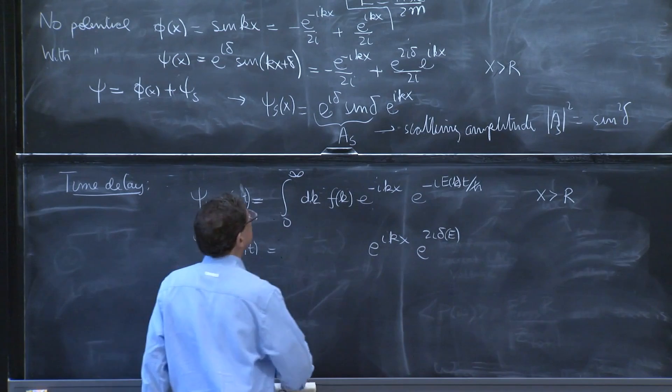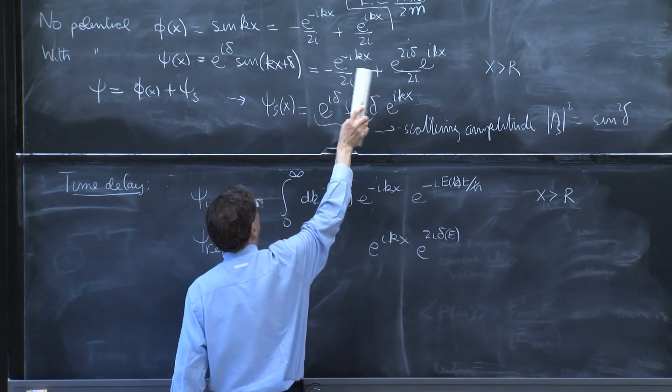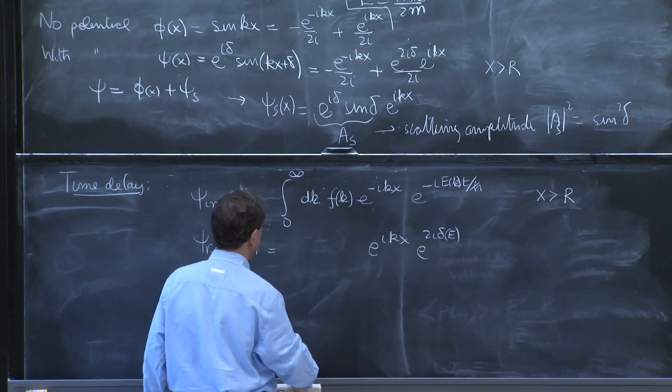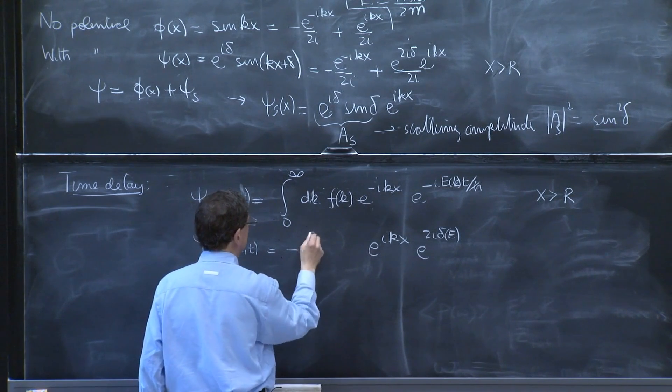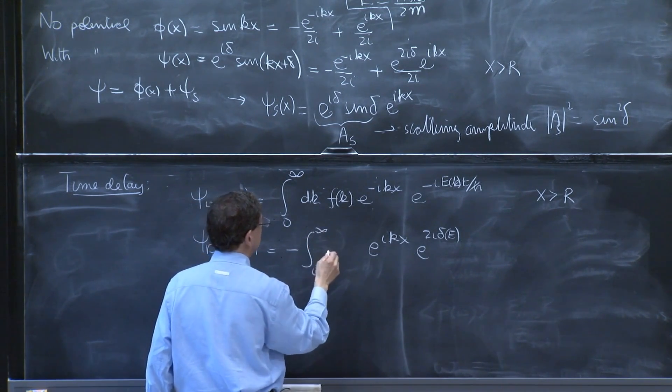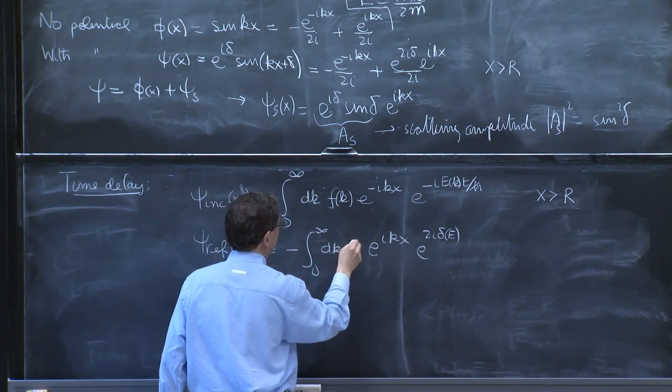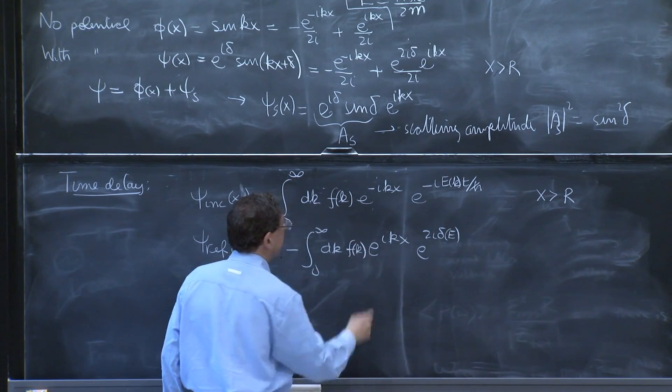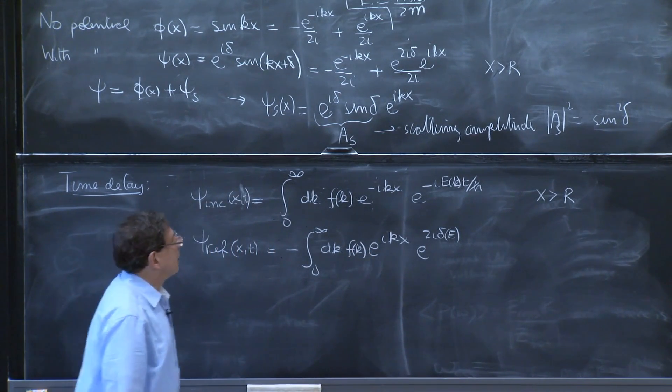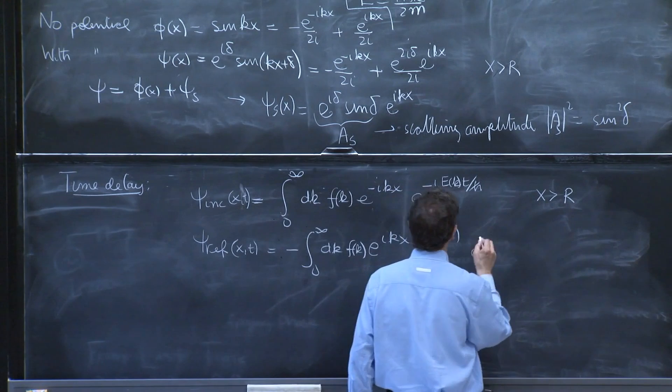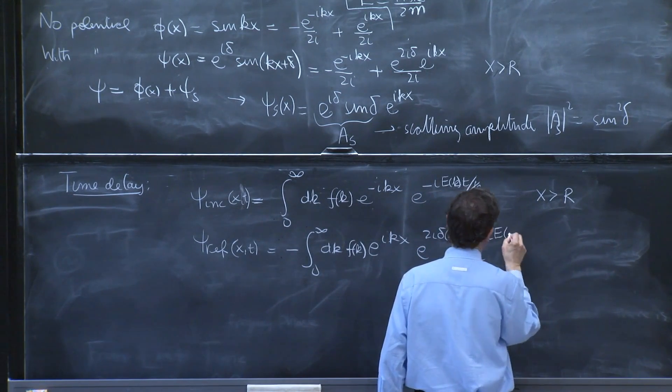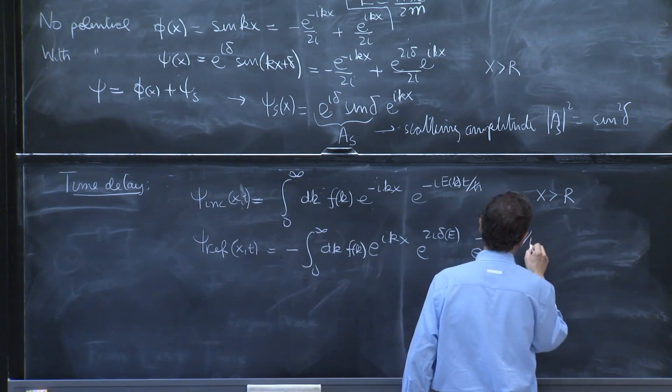But I must also put an e to the 2i delta of the energy, or delta of k. And I must put an extra minus sign, because these two have opposite signs.